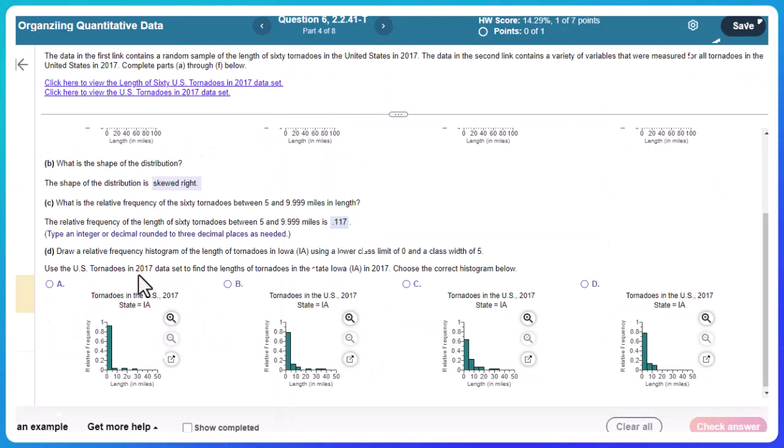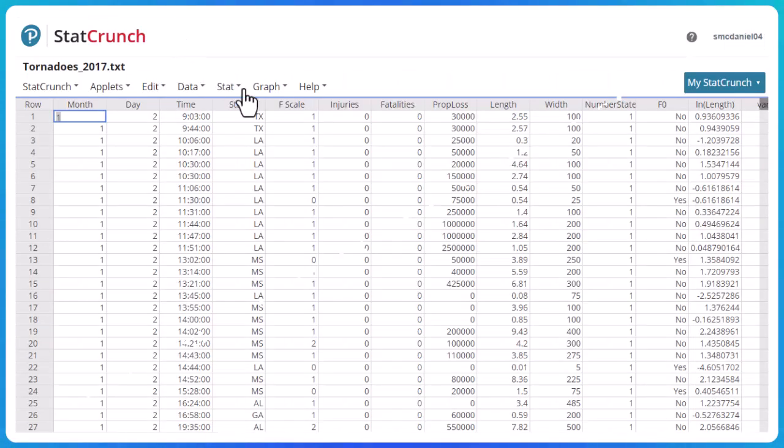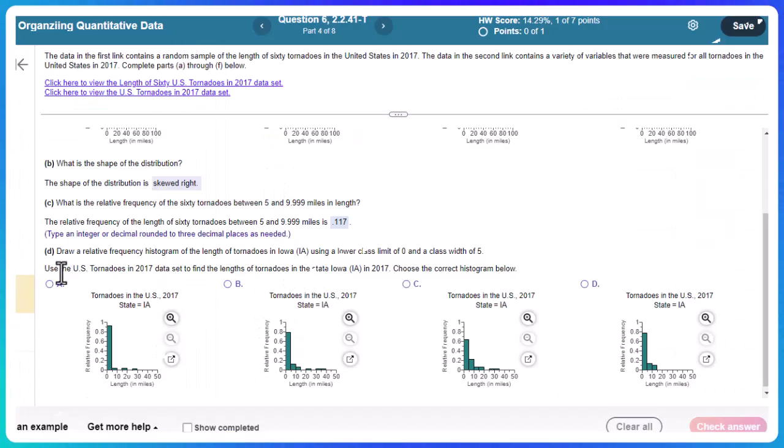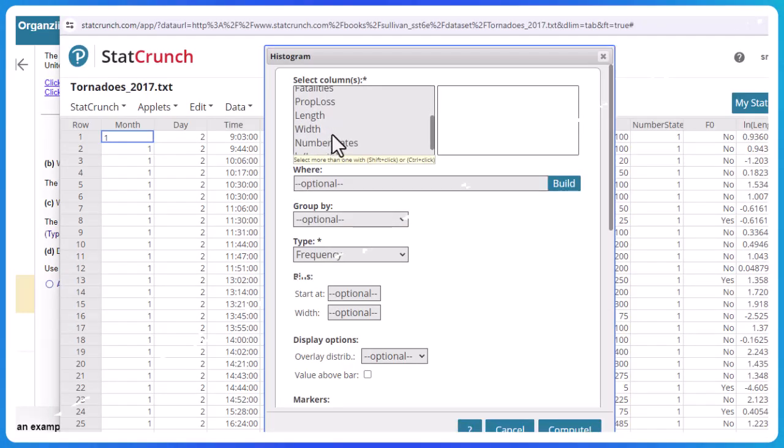Now part D, draw a relative frequency distribution histogram for the length of tornadoes in Iowa using a lower class limit of zero and a width of five. So now we actually have to specify the state. So notice I need to use a different data set, that other one didn't have separated by state. So I need to click on the second data set here. Okay, so I'm going to do the same thing, graph histogram. And you check what am I graphing here for the length of tornadoes in Iowa. Okay, so I need to come over here, length. And then remember, here is where I need to say where the state equals Iowa.